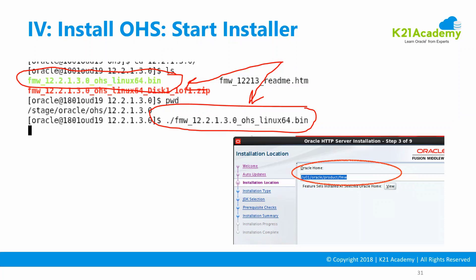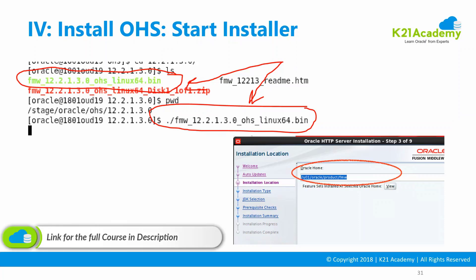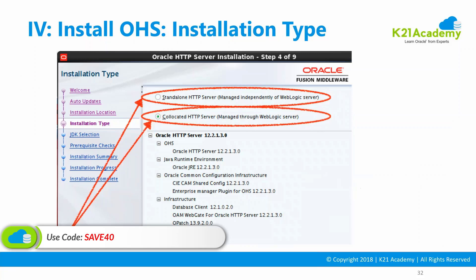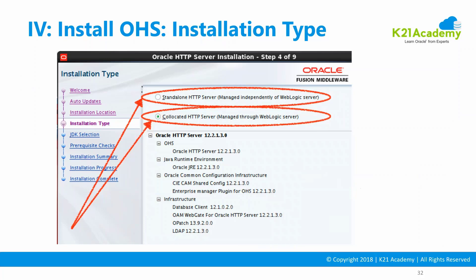If you're doing it in co-located mode, make sure Oracle HTTP Server is installed in the same Oracle Home in which you installed Oracle Fusion Middleware Infrastructure — this is very important. During installation, you'll get the option to choose standalone Oracle HTTP Server or co-located HTTP Server. You will only see the co-located option if you have already installed Oracle Fusion Middleware Infrastructure. If you haven't installed it, you will only see standalone HTTP Server.